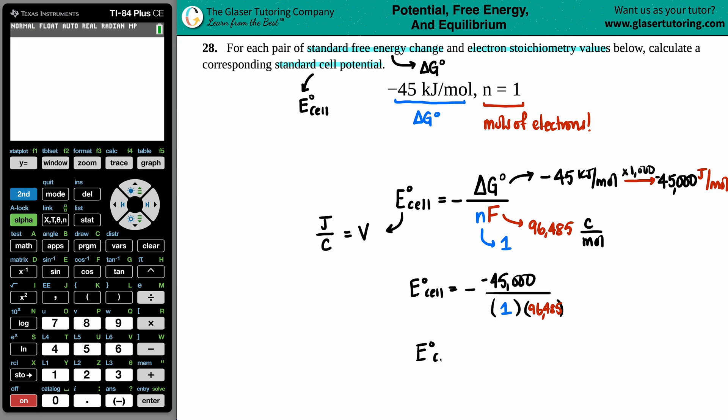E cell equals - a negative times a negative is a positive, but I'll just put it in there. A negative times a negative, 45,000 divided by one is itself. I'm going to divide again by 96,485, press enter. And there you go. I got two sig figs coming from the 45, so 0.47.